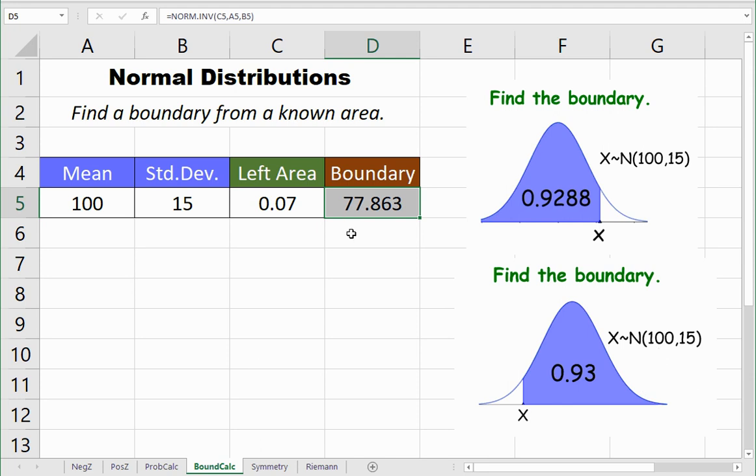When doing this, just make sure that your answer makes sense. Notice that I was careful to check that my x boundary I found looks like it's to the left of the mean, so it should be less than 100. Likewise, for my first example, 0.9288 on the left gave me an IQ score of 122, and that should be to the right of the mean, so greater than 100. That made sense too.